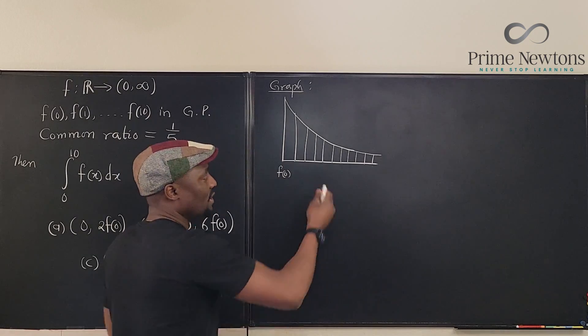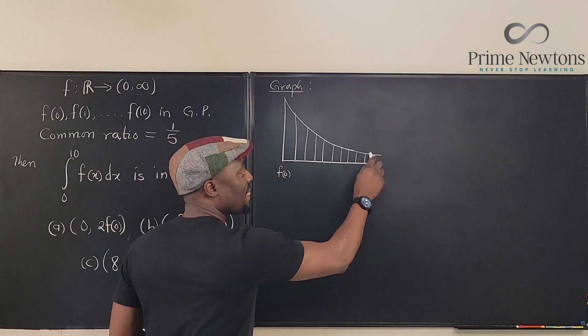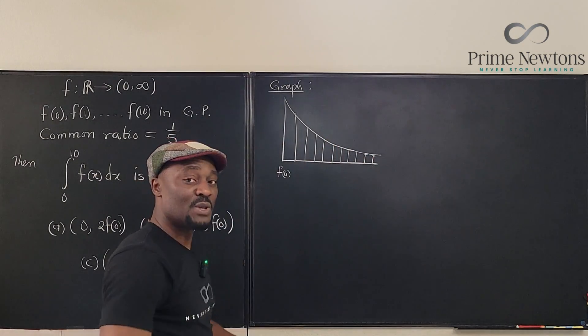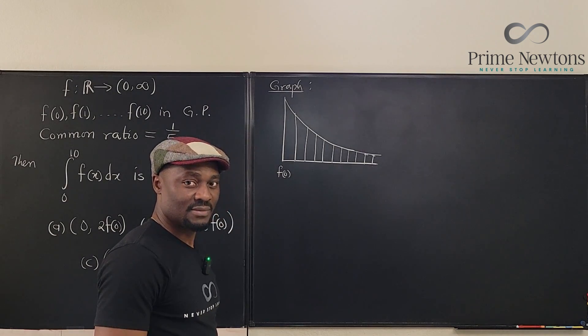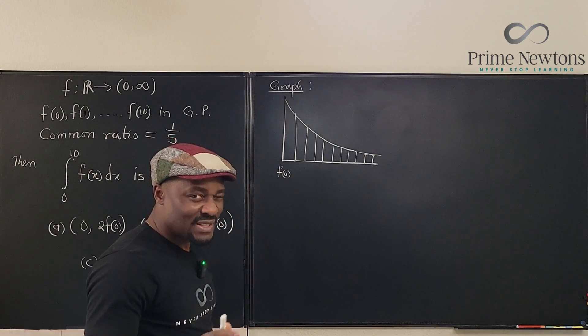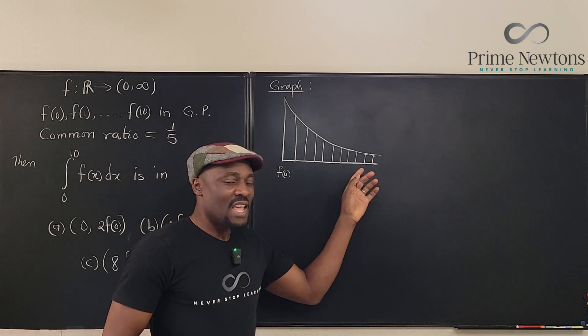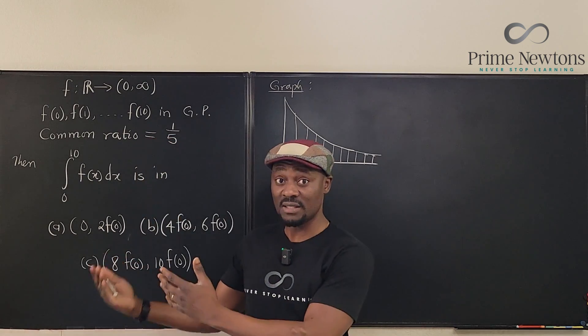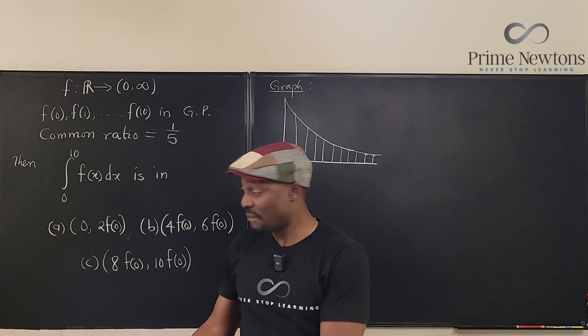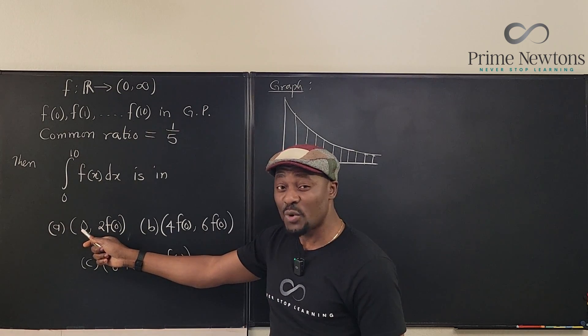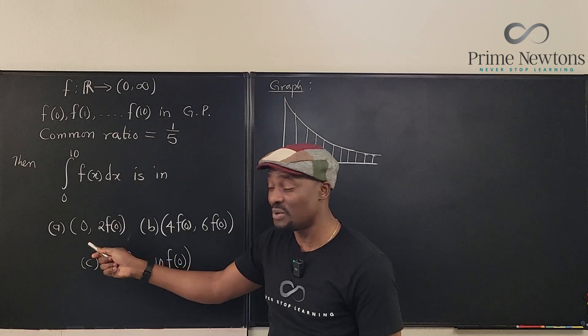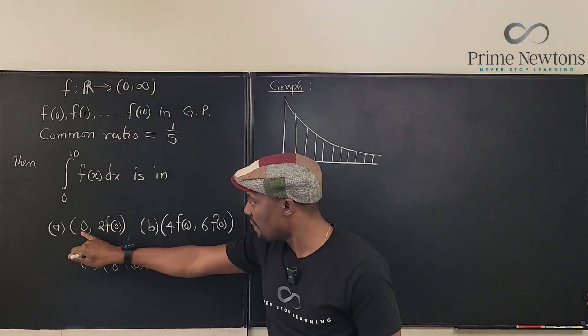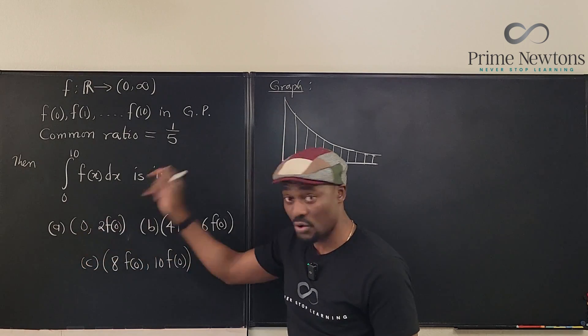So when you do an underestimate, which means you're taking the smaller heights, the smaller heights are on the right. So the right Riemann sum will be your underestimation. Your left Riemann sum will be your overestimation. Now if you take the underestimation, the worst you can get is a number that's greater than zero. I'm just trying to show you that whatever area you calculate, whatever sum you compute, will be greater than zero.